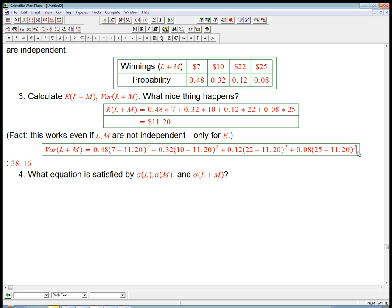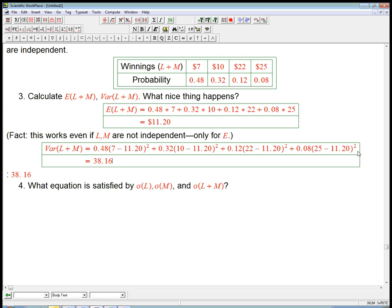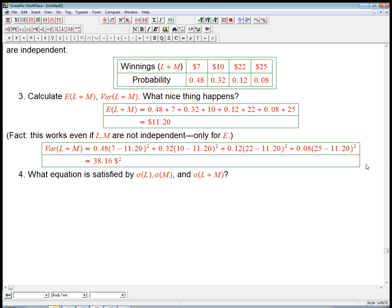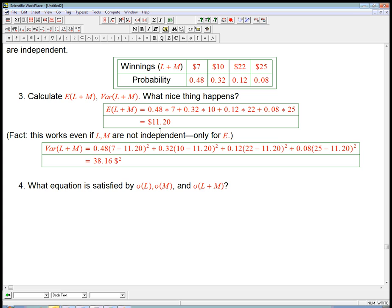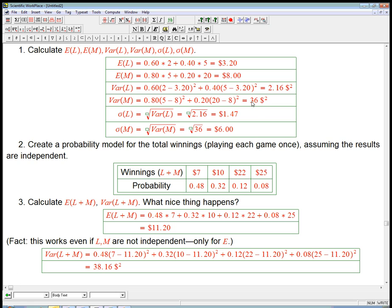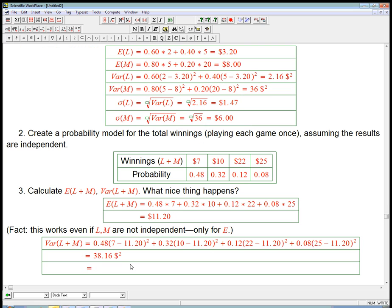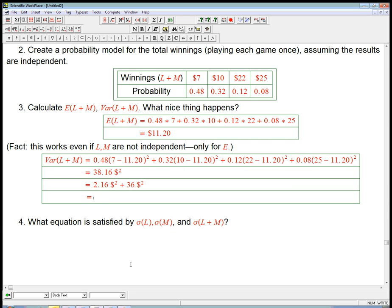So let me put that up here. 38. Now remember, that's in dollars squared, this weird unit. But here's where the variance proves it's worth. Even though it comes out in a weird unit, it's a measure of spread, which is certainly a nice thing to have. But the really cool thing about it is the variance of the sum here was exactly the variance of L added to the variance of M. So let's emphasize that. That's 2.16 dollars squared plus the 36 dollars squared. So it's the variance of L plus the variance of M.